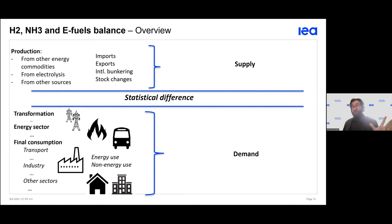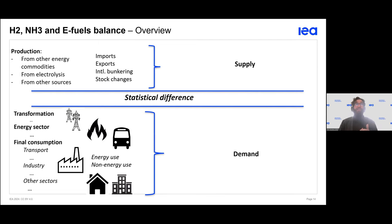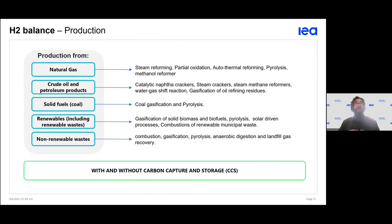Now let's look at flows. On the demand side, it is fairly clear: hydrogen can be used for transformation, for the energy sector, or for final consumption. We also distinguish between energy use and non-energy use. On the supply side, there are more flows to capture, because we must account for the sources and production methods, as explained several times already. This will be specifically reflected in the data tables.